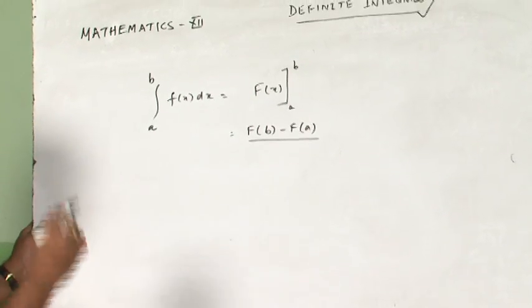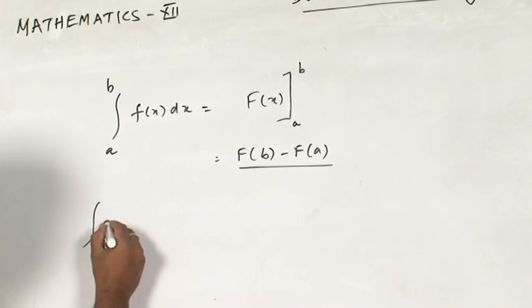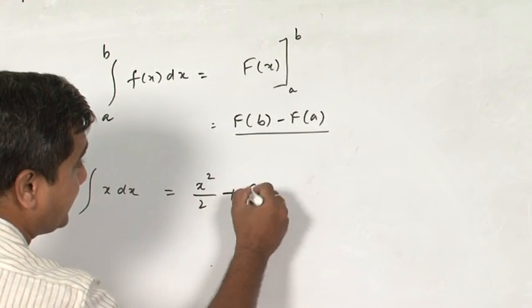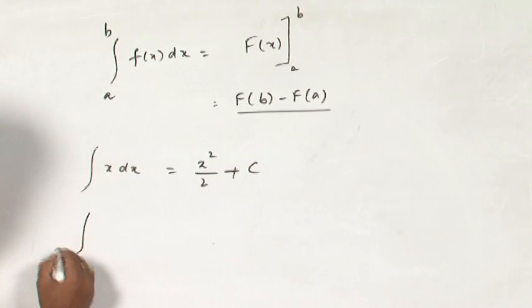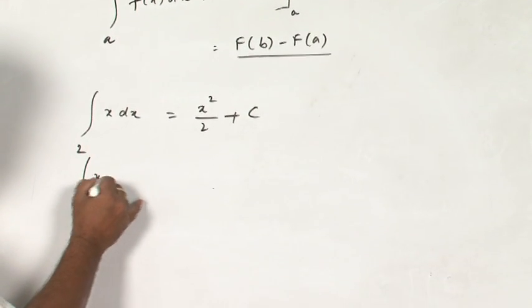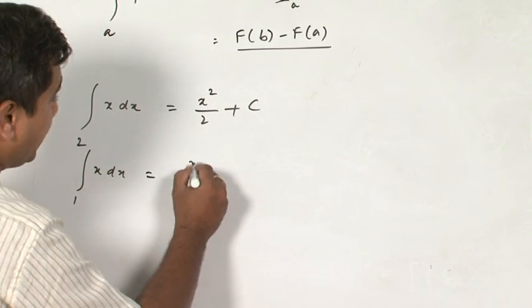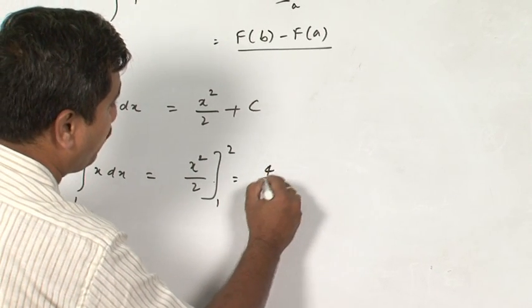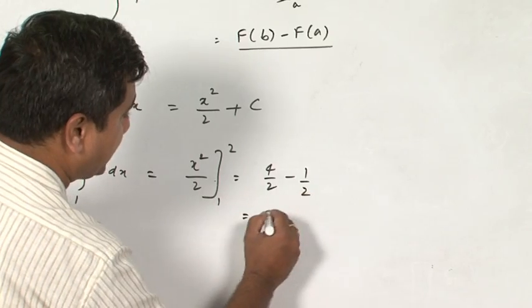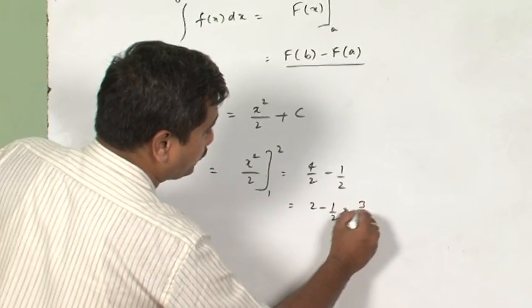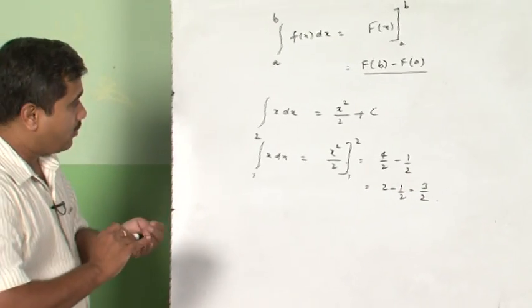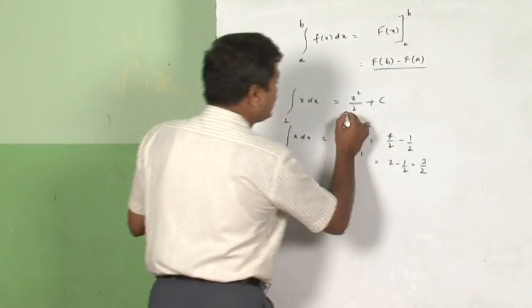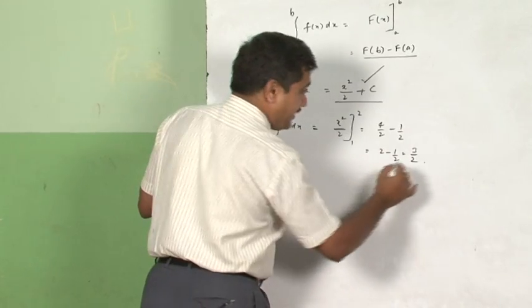So here I give you a small example. Supposing that you want to do x dx integration, what do you write? It is x square by 2 plus c. But if it is given as 1 to 2 x dx, then what happens? It is x square by 2 going from 1 to 2, it is going to be 4 by 2 minus 1 by 2, it is 2 minus half is equal to 3 by 2. Do not you think that there is a lot of difference between this value and this value?